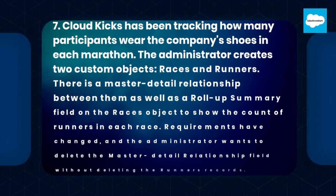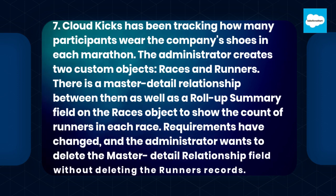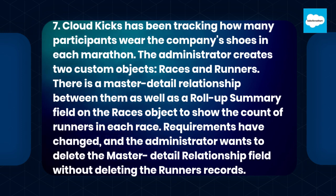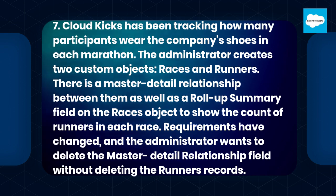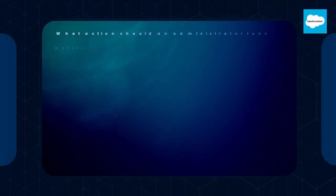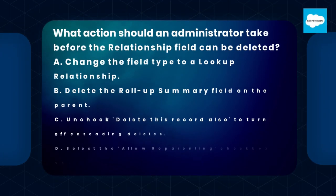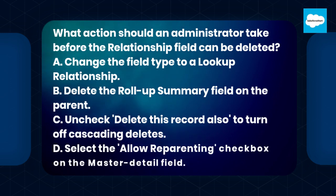Question 7: CloudKix has been tracking how many participants wear the company's shoes in each marathon. The administrator created two custom objects, Races and Runners, with a master-detail relationship between them, as well as a roll-up summary field on the Races object to show the count of runners in each race. Requirements have changed, and the administrator wants to delete the master-detail relationship field without deleting the runner's records. What action should an administrator take before the relationship field can be deleted?